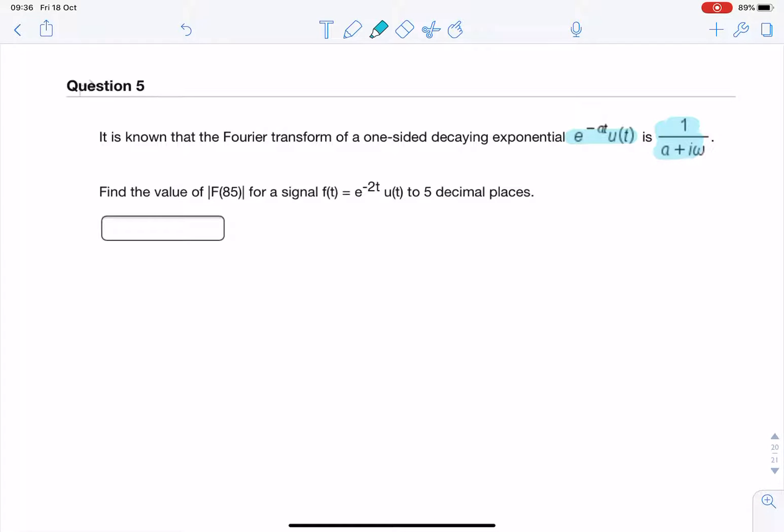We're being asked for f of 85, so notice that it's asking for the modulus, so we need the magnitude of the Fourier transform. 85, that's just the question telling us that omega is 85. And that 2 there, that's just the question telling us that a equals 2, so that's that value there.